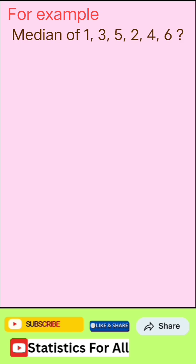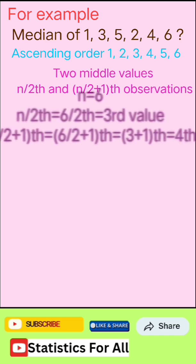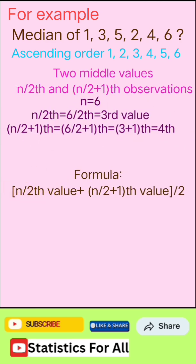Arrange the data in ascending order: 1, 2, 3, 4, 5, 6. Next, find the two middle values, n/2 and (n/2)+1 observations.